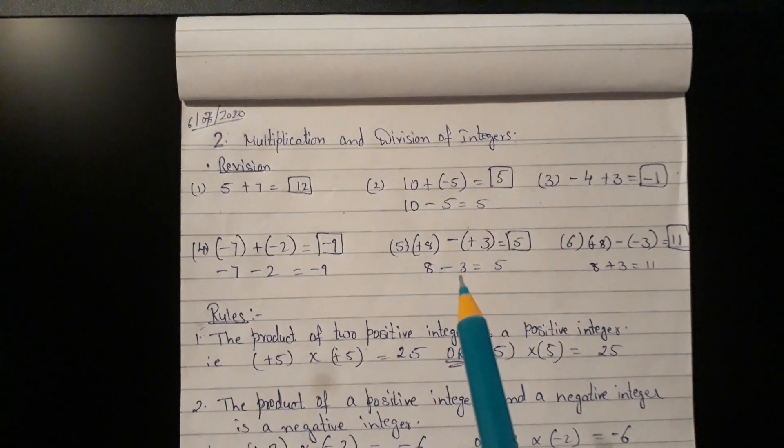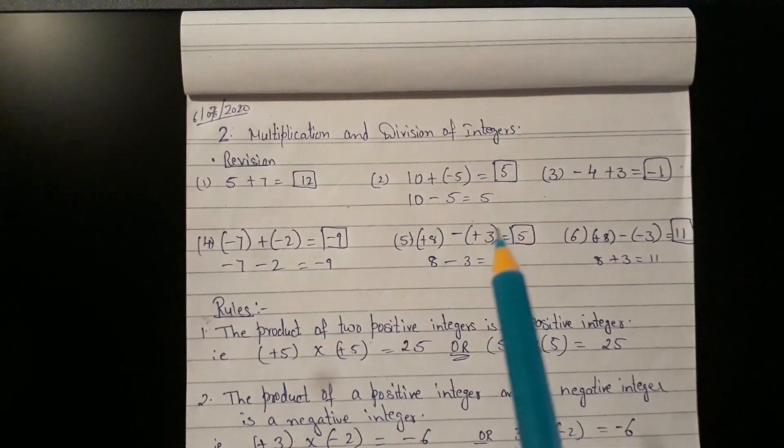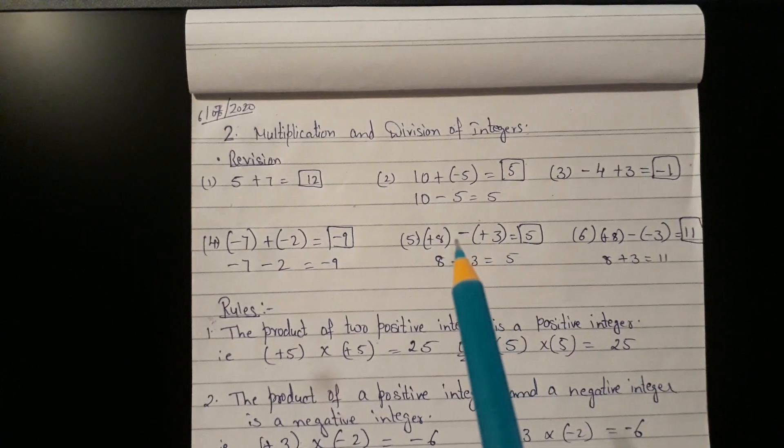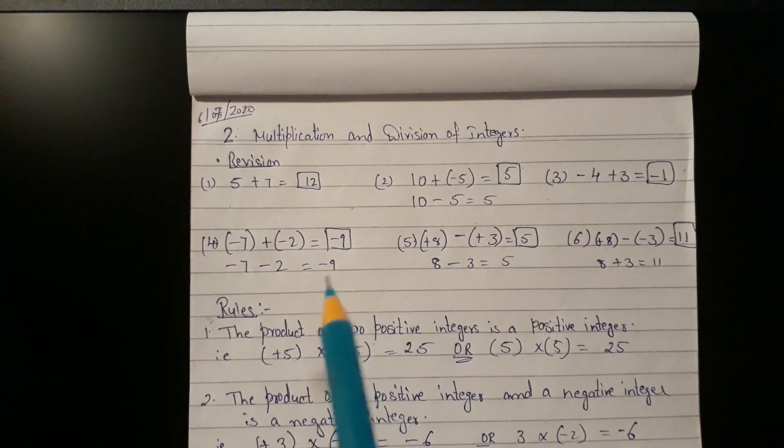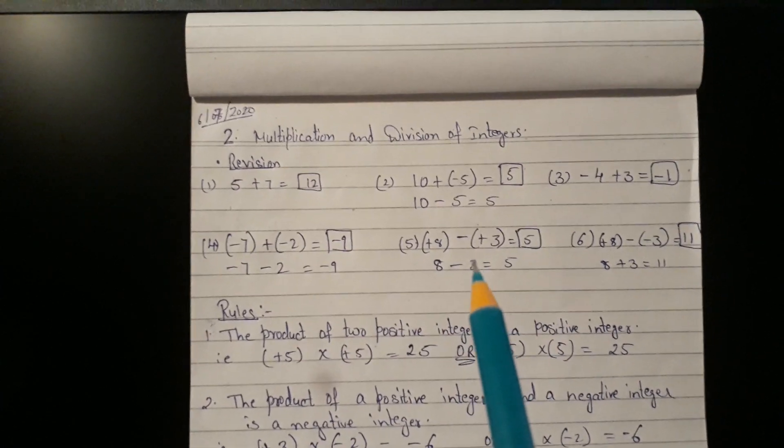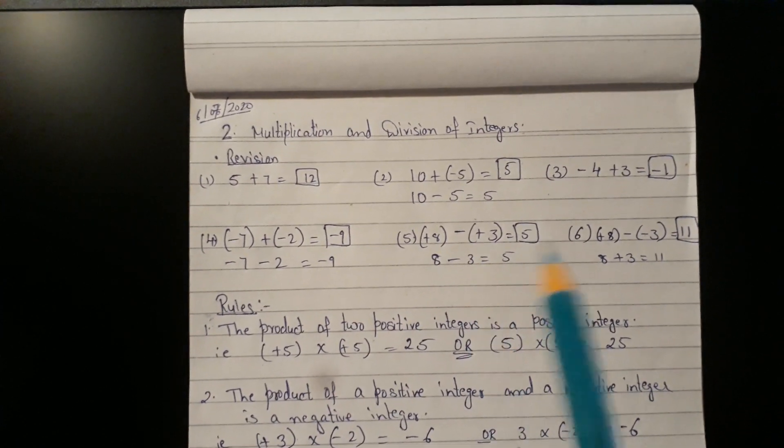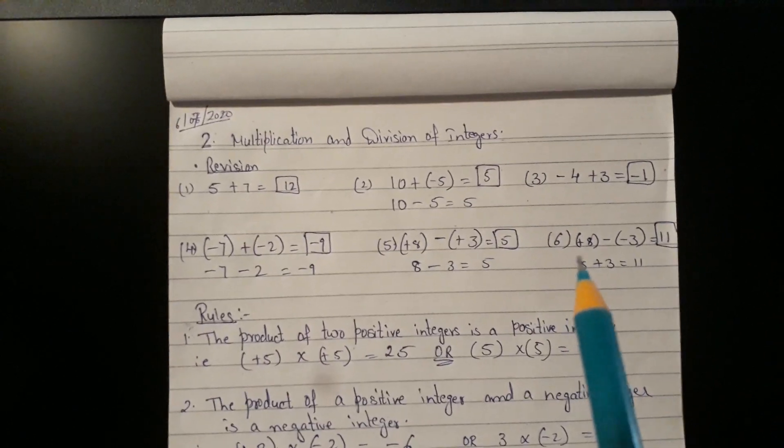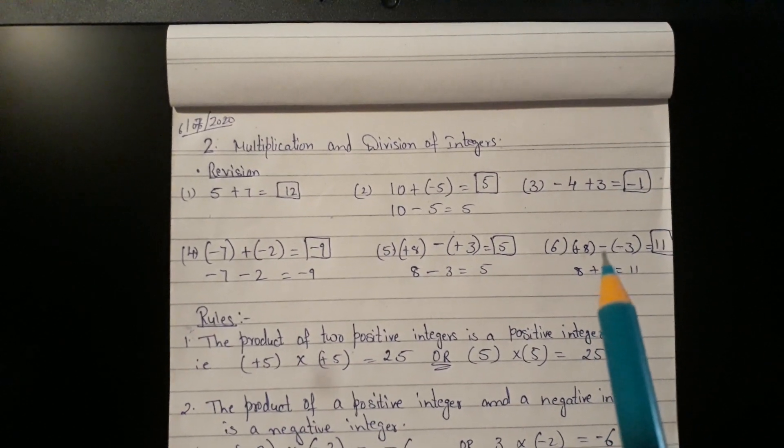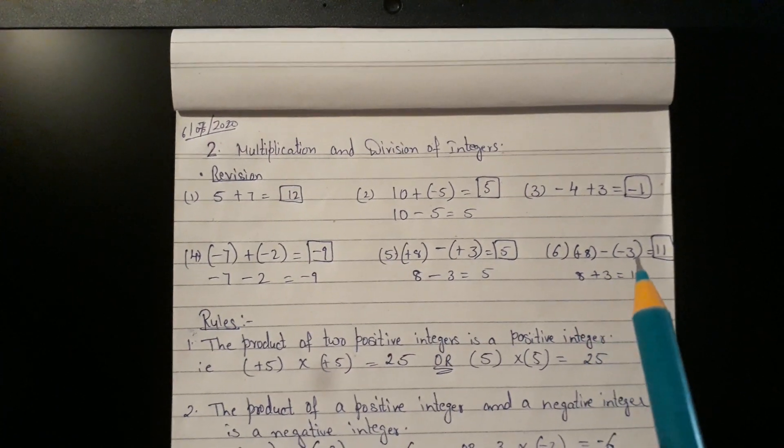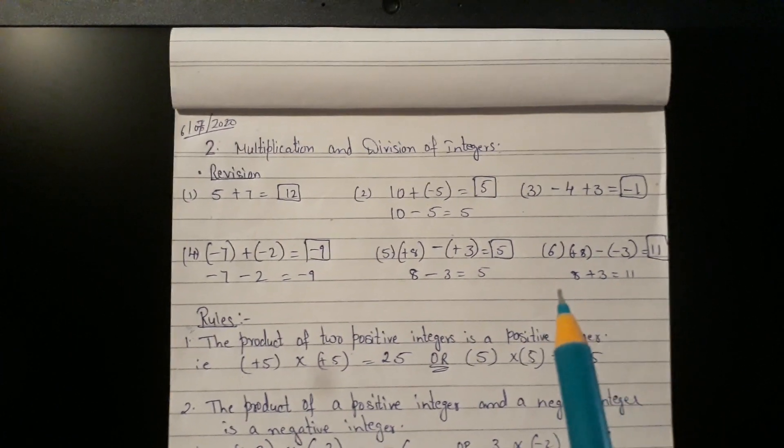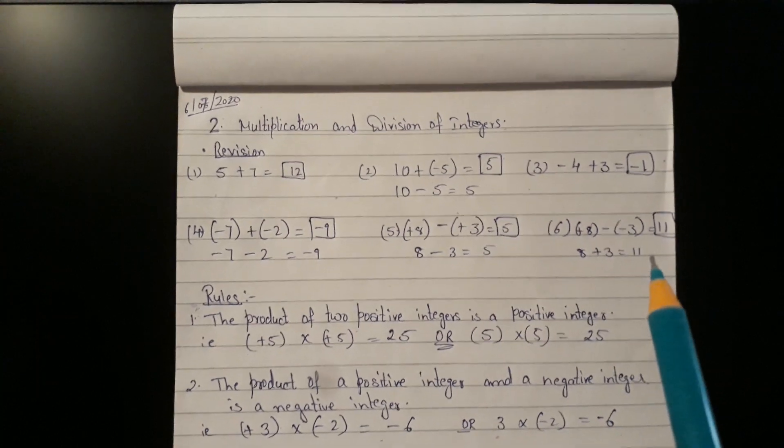Minus into plus minus. Your plus into minus and your minus into plus. So whether it is plus into minus or minus into plus, the answer will take the sign of the greater number. Sixth one, plus 8 minus bracket minus 3. Open the bracket. Minus into minus will give you plus. So that's 8 plus 3. Answer is 11.